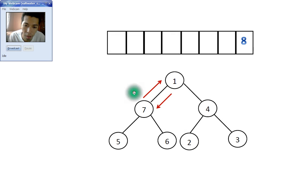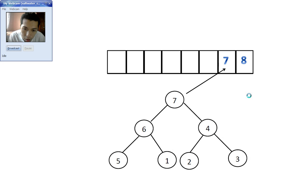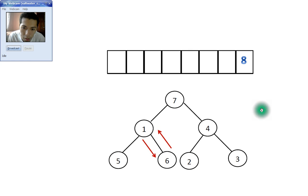We examine the tree once more. The left side is okay. We evaluate the upper portion: 1 and 7. Since 1 is less than 7, we switch them — 7 goes to the top and 1 goes to the bottom. Then we shift to this part: 1 and 6. Since 6 is greater than 1, they will switch places — 6 goes up and 1 goes down.